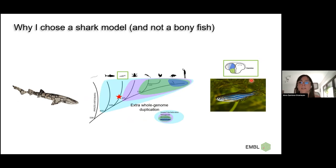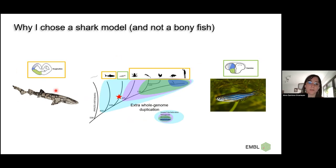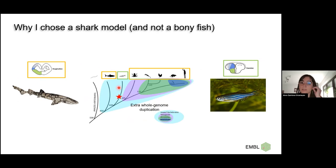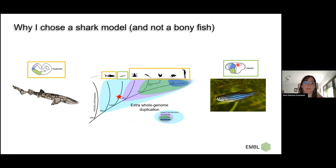One reason not to use zebrafish is that sharks did not undergo an extra whole-genome duplication as bony fish did, meaning orthology is one-to-one when comparing sharks and mammals. Also, the telencephalon of bony fish is extremely divergent — it develops by eversion instead of evagination, which is the way all other tetrapods and also cartilaginous fish develop. This makes comparisons of zebrafish with other vertebrates very difficult, especially in the telencephalon.